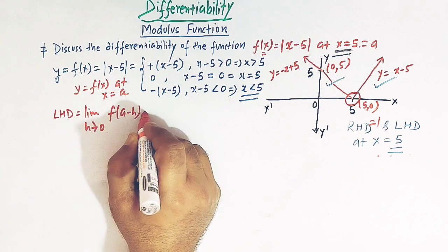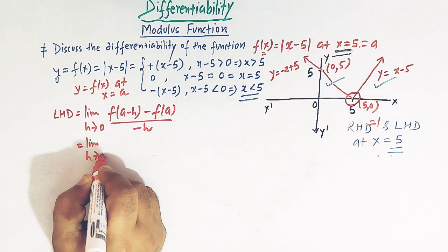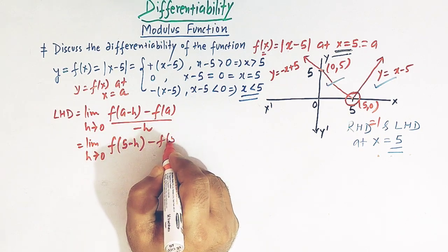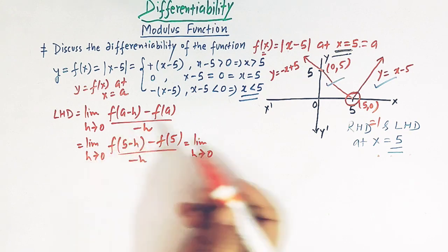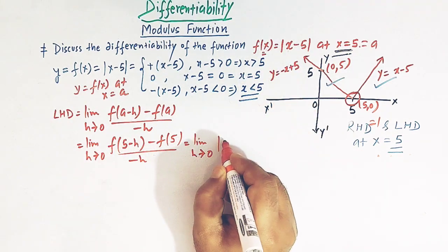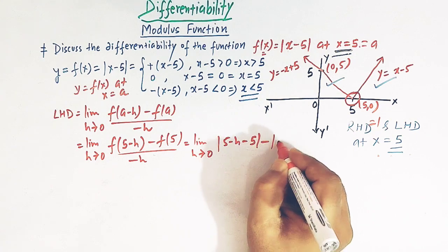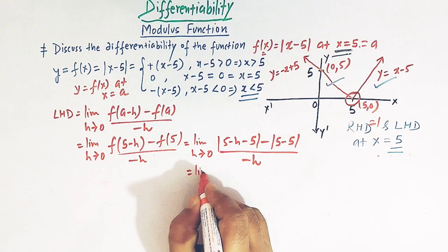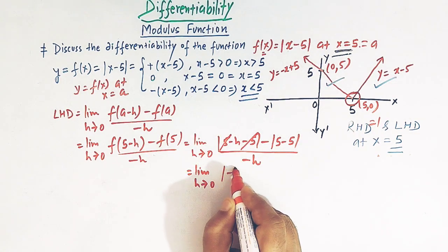The left hand derivative is defined as: limit as h→0 of [f(a-h) - f(a)] / (-h). Replacing a with 5, we get [f(5-h) - f(5)] / (-h). f(5-h) is obtained by replacing x with (5-h), giving |5-h-5| = |-h|.